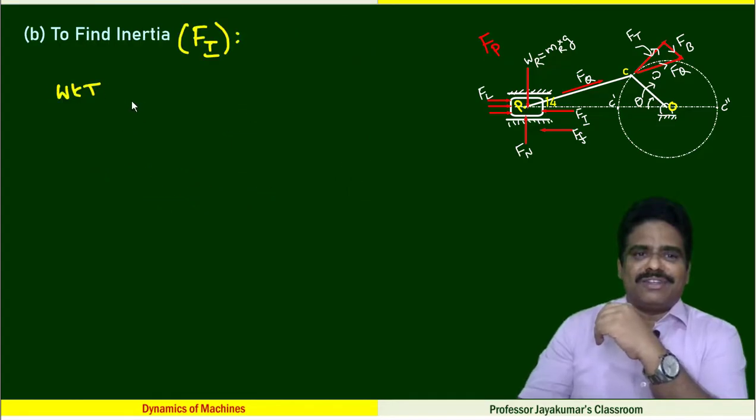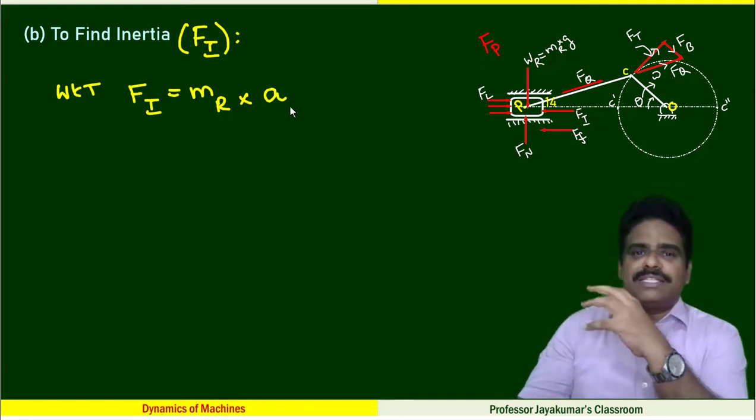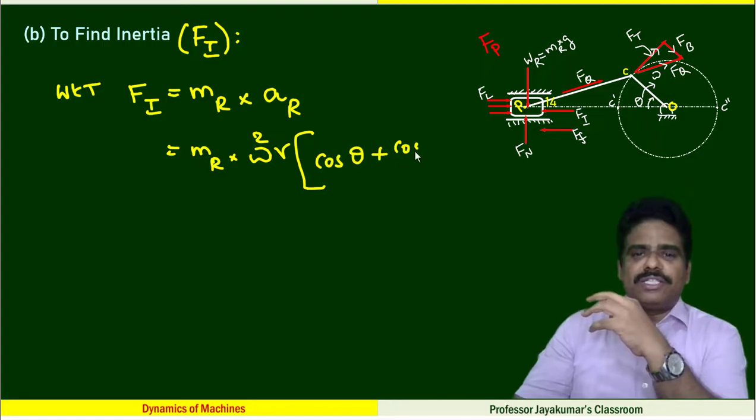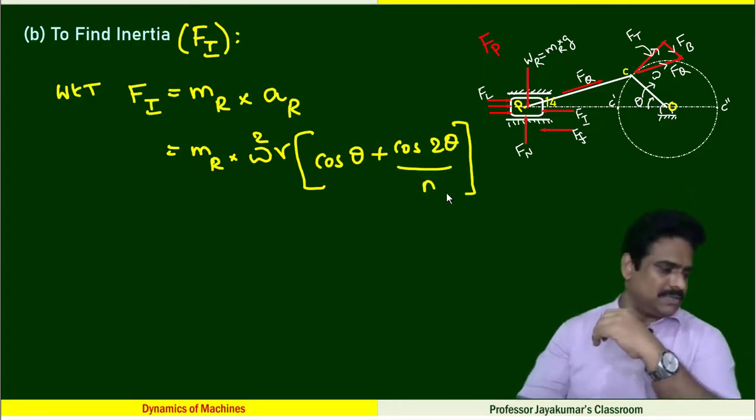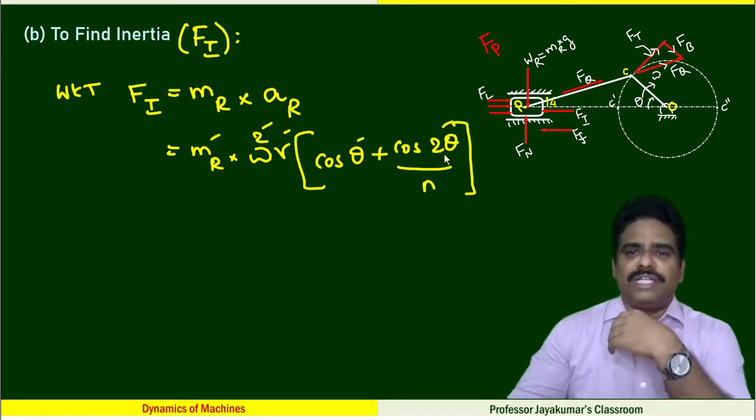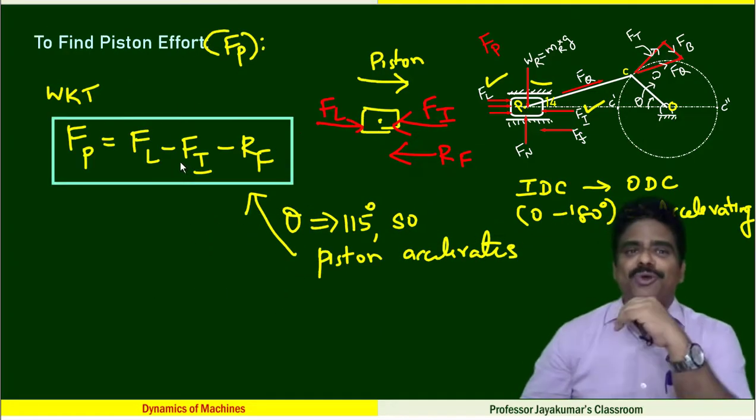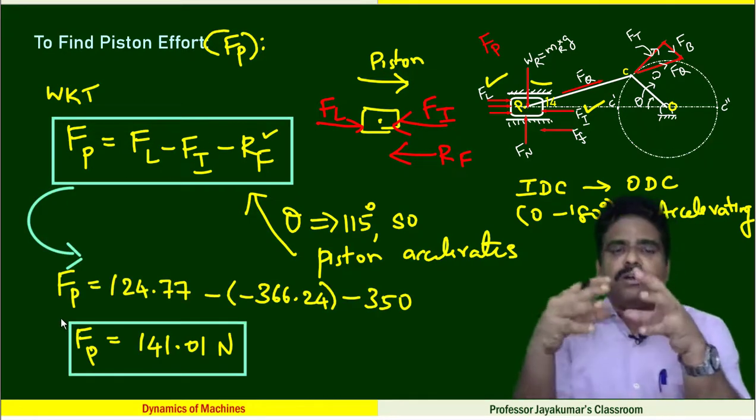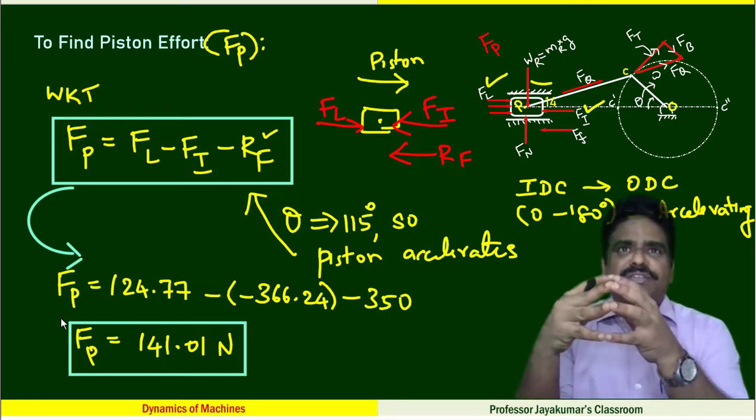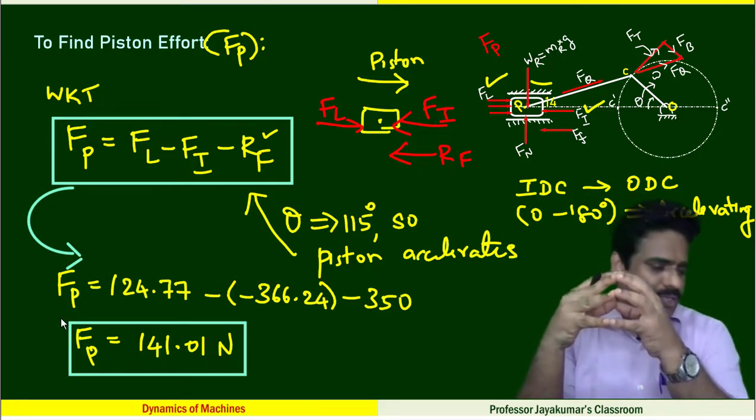We know that inertia force of the piston is mass of the piston multiplied by acceleration of the piston. Formula for acceleration of the piston is like this. In this formula, all data are known. I am substituting all the known values. By simplification, I will get the inertia force value. Having known FL and FI value, I think now we can go back to the piston effort formula and substitute them. On simplification, we get piston effort as 141.01 Newton.